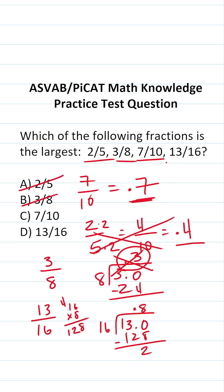We have a remainder of 2. I don't have to keep doing this long division because I know it's going to be 0.8 something. 0.8 something is bigger than 0.7, so we know that D, 13/16, is the largest fraction.